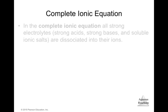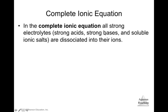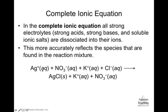In the complete ionic equation, all strong electrolytes, strong acids, strong bases, and soluble ionic salts are shown as dissociated ions. So silver nitrate separates into silver⁺ and nitrate⁻ ions (both aqueous), and potassium chloride into potassium⁺ and chloride⁻ ions. Silver chloride is kept as a solid because it is insoluble, while potassium nitrate is soluble and shown as separated ions.